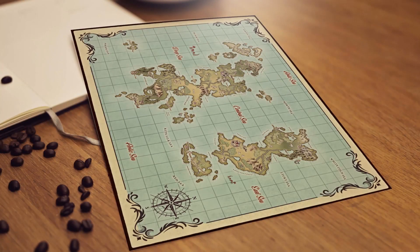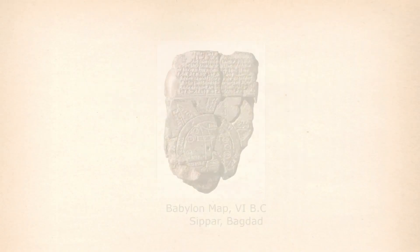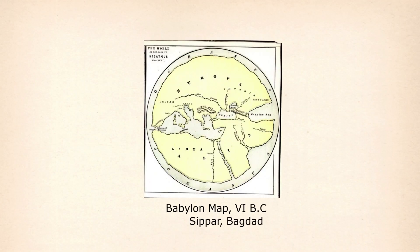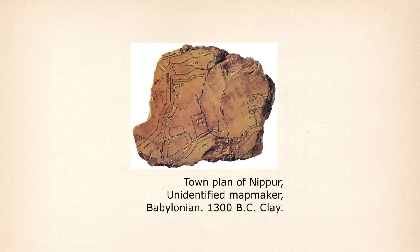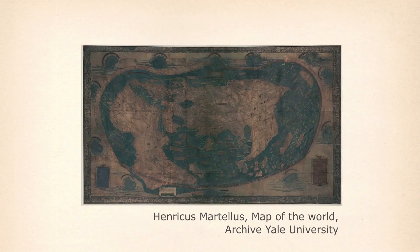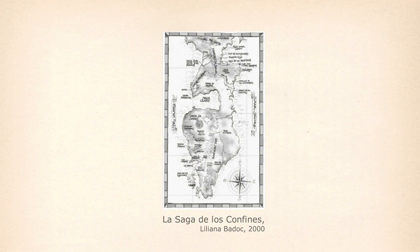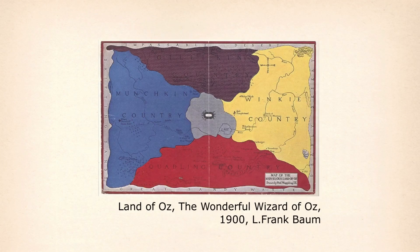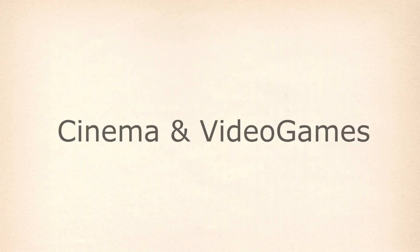This course will be structured in several lessons. First we'll briefly see the origin and history of cartography or map making as a reference. We'll research different examples we can find throughout history, both with real maps and fantasy related maps.